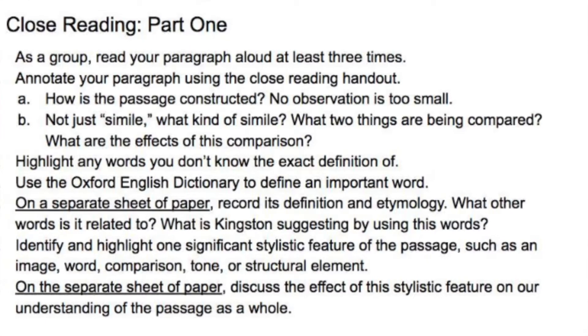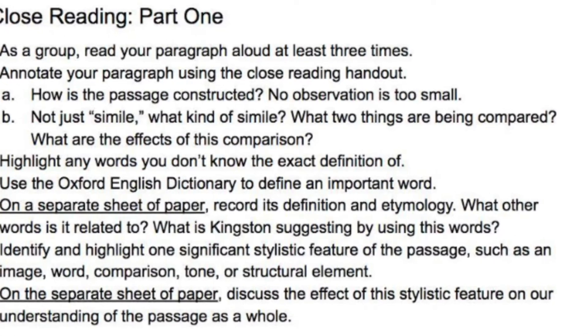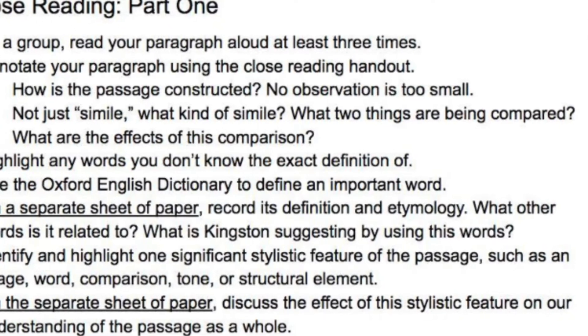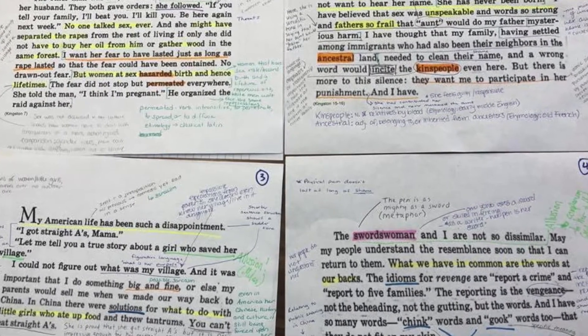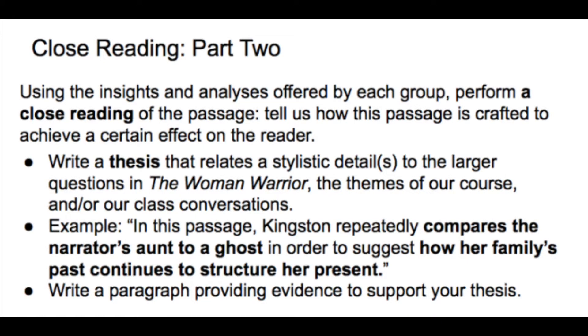Students can highlight and look up definitions of words they don't understand, circle phrases with a certain tone, look for ambiguous words, find patterns in word choices, and analyze literary devices if they know them. Every 15 minutes you rotate the passage, and the next group continues finding details the previous group missed, adding annotations to the ones already on the page. That's the first half. In the second half, the passage is returned to the original groups, and each group writes a thesis statement explaining how the passage is crafted to achieve a certain effect on the reader, then writes a paragraph supporting their thesis using all the evidence found in the annotation stage.